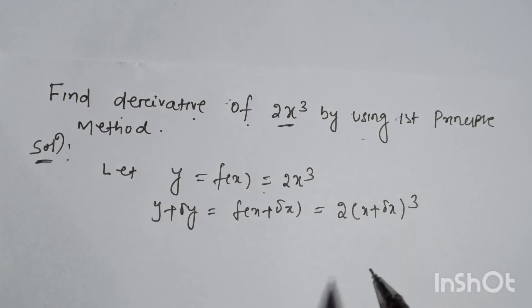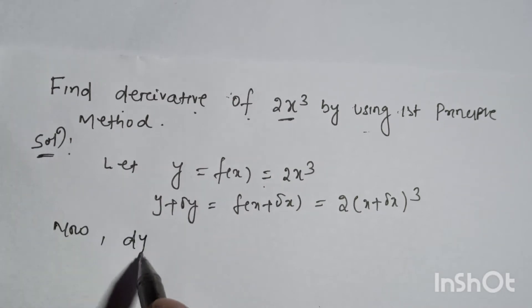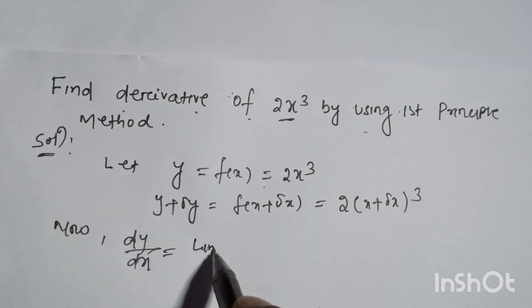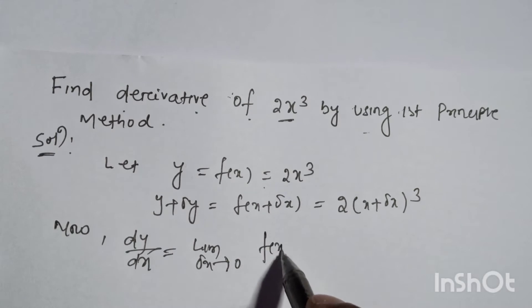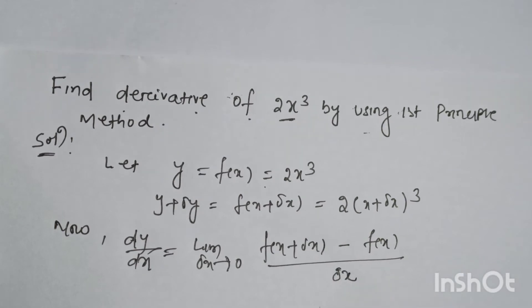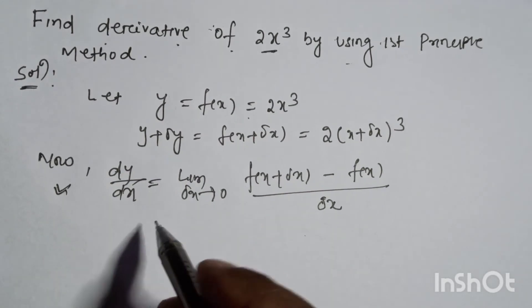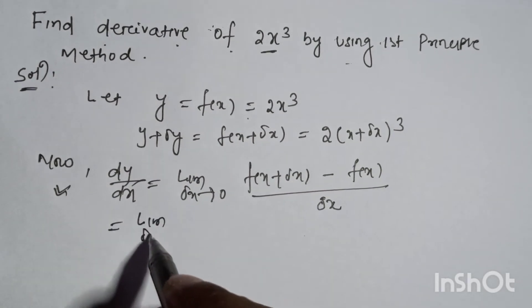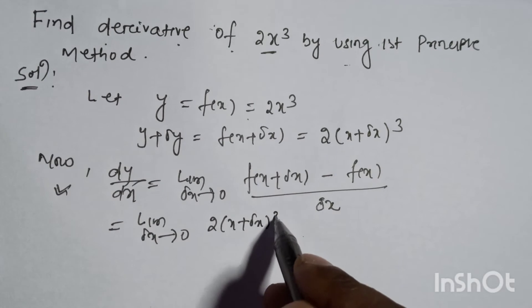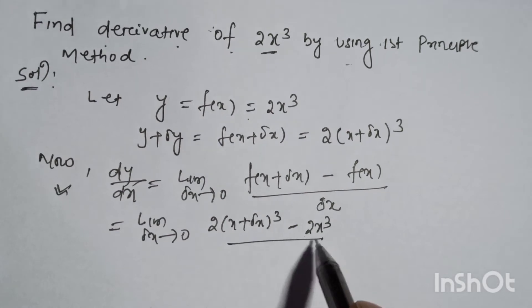Now we know the first principle formula: dy/dx equals the limit as delta-x tends to 0 of [f(x + delta-x) minus f(x)] divided by delta-x. Applying this: limit as delta-x tends to 0 of [2(x + delta-x)³ minus 2x³] divided by delta-x.